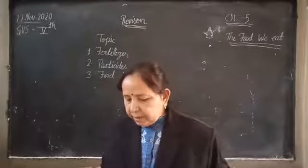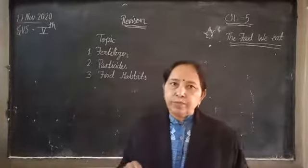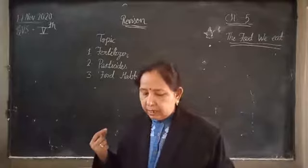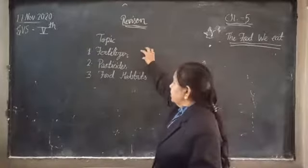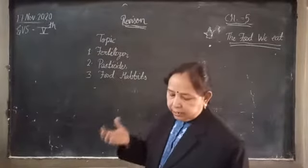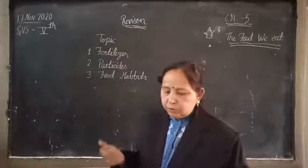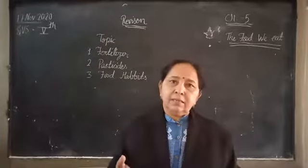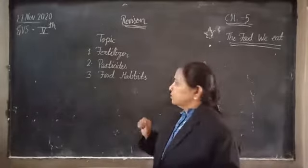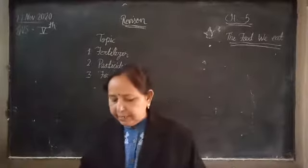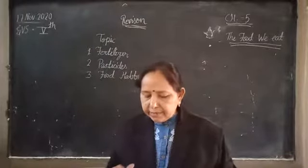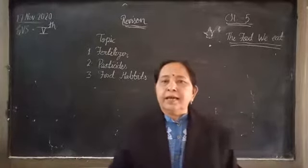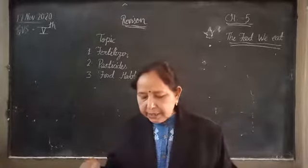We call it natural fertilizer. Fertilizers that are made by human beings are called artificial fertilizers. Artificial fertilizer is made by recycling chemicals in factories, from chemical materials.